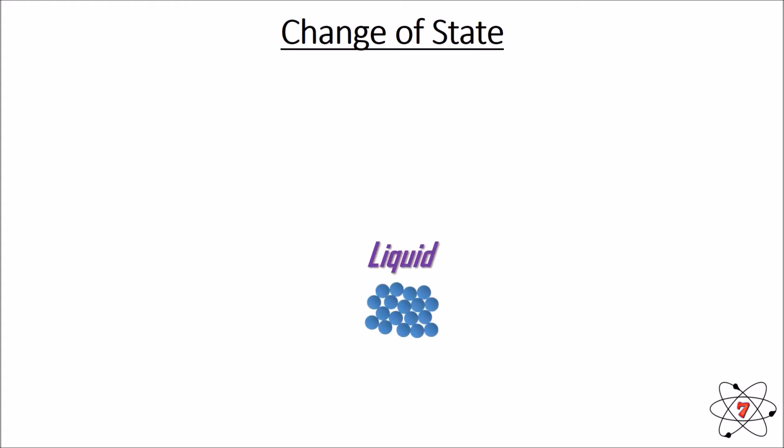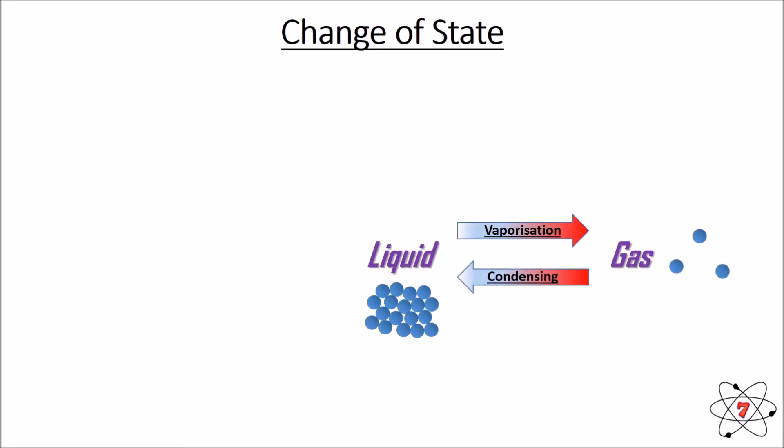If we start with a liquid, with particles arranged in a random fashion but still touching, and we heat it up adding energy, vaporization occurs. There are two other words for vaporization: evaporation and boiling, and they're not quite the same thing. Vaporization is a general term meaning the liquid turns into a vapor — the particles turn into a gas. If we cool that gas back down again it loses energy, condenses, and becomes a liquid.